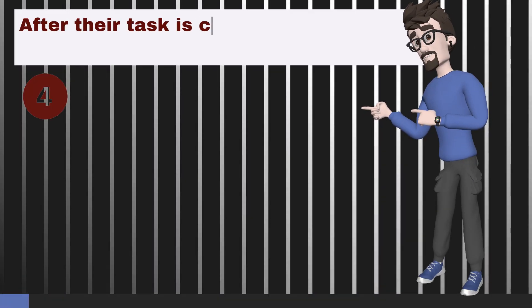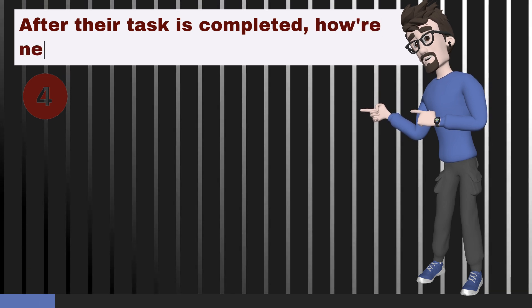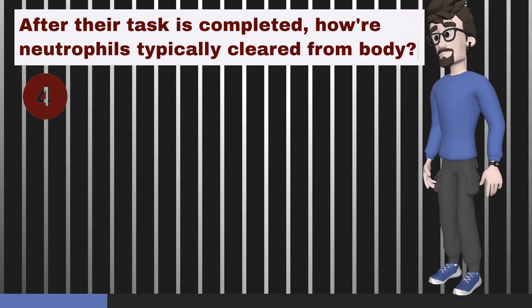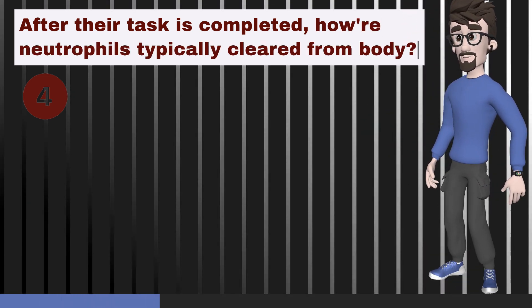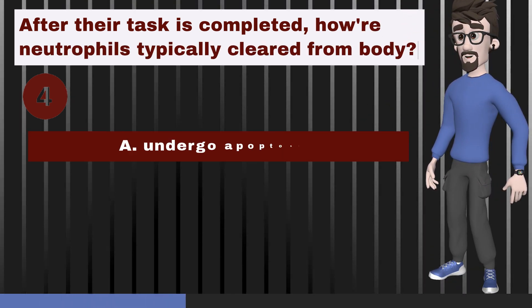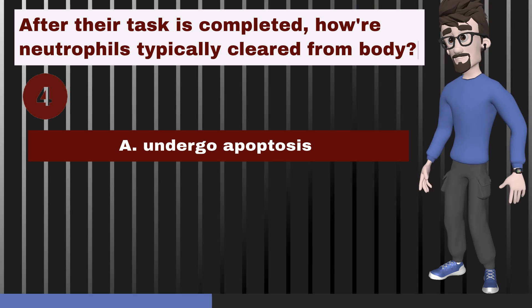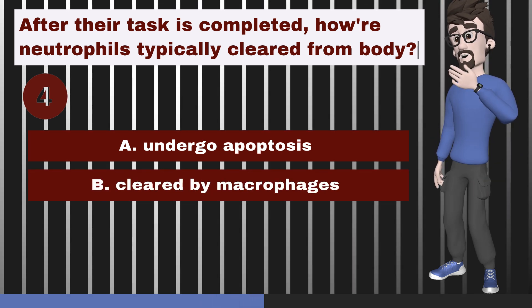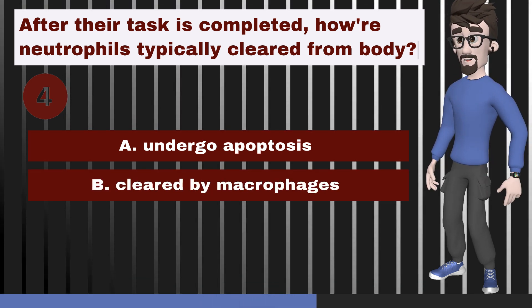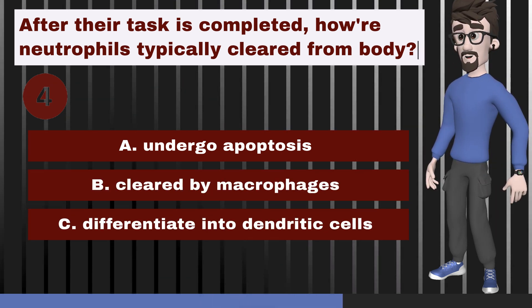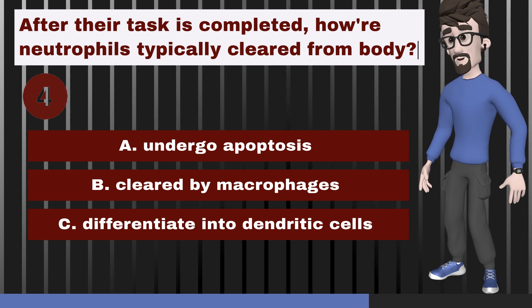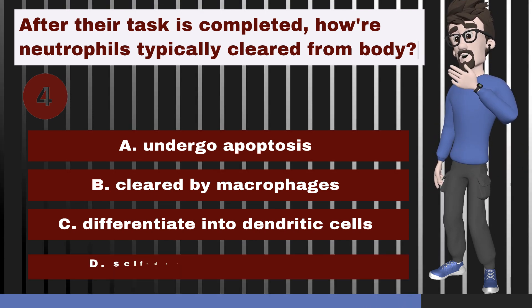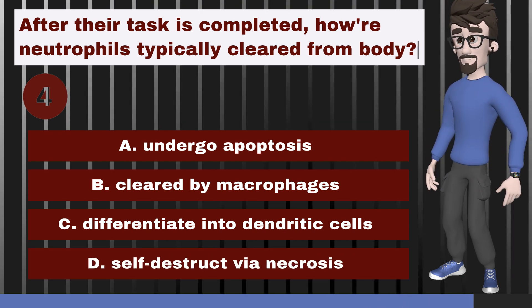After their task is completed, how are neutrophils typically cleared from the body? A. They undergo apoptosis. B. They are cleared by macrophages. C. They differentiate into dendritic cells. D. They self-destruct via necrosis.